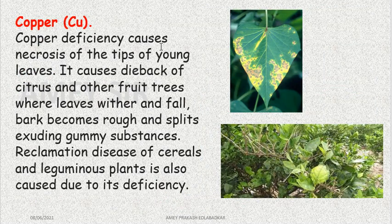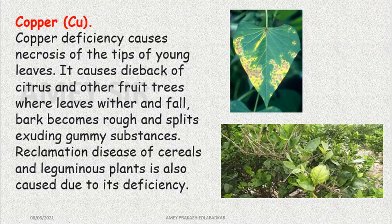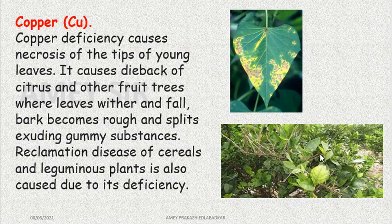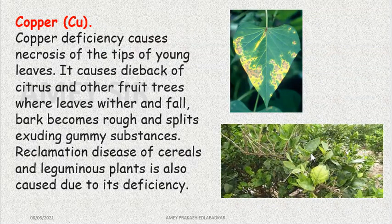Copper is another important element. Copper deficiency shows effects only on the tip — the leaf tip, especially the young leaf tip. Die-back of citrus was discussed in a previous video. The size of the fruit also becomes small. Infections are also seen in leguminous plants; the entire stem surface becomes rough and the stem is most impacted.